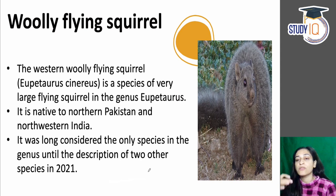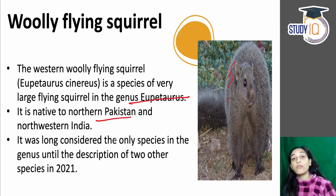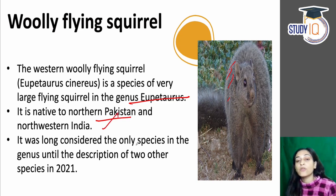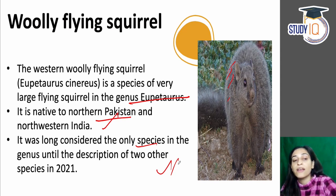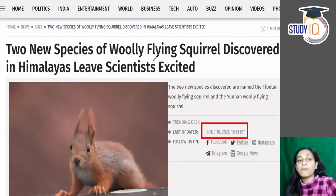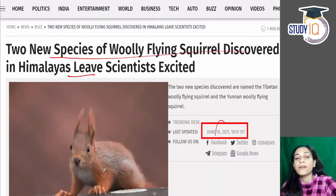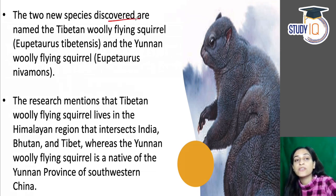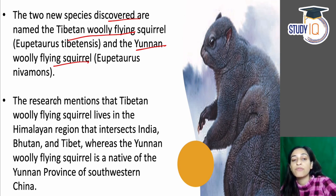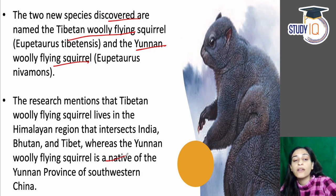The Woolly Flying Squirrel was recorded 20 years ago. Its genus is Eupetaurus, and it is native to Northern Pakistan and Northwestern India. It is a small species. As of June 2021, new species were discovered: the genus previously known had two new species identified — the Tibetan Woolly Flying Squirrel, found in Bhutan and Tibet in the Himalayan region, and the Yunnan Woolly Flying Squirrel, found in Yunnan province in southwestern China.